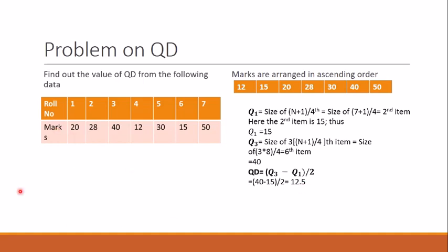However, as mentioned earlier, the first 25% and last 25% of the data are not considered in quartile deviation. Hence, I would not prefer quartile deviation as the best measure of dispersion, though at times it must be used.